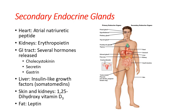The GI tract releases several hormones — CCK or cholecystokinin, secretin, and gastrin. The GI system is mainly involved in digestion and absorption, but it does release these hormones, giving it a secondary endocrine function. The liver, also a major exocrine gland involved in breakdown of digestive products, secretes IGF — insulin-like growth factors, also called somatomedins. We'll talk about how those function in the endocrine system coming up.